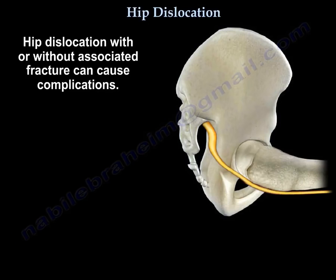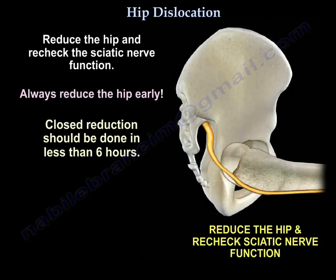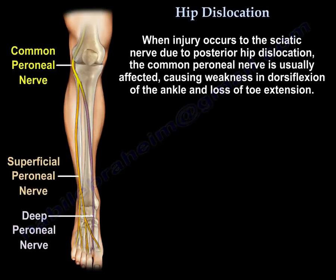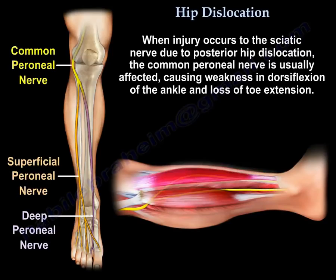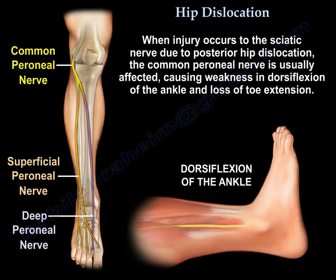Posterior hip dislocation can also cause sciatic nerve palsy. Reduce the hip and recheck the sciatic nerve. Always reduce the hip early — closed reduction should be done in less than 6 hours. When injury occurs to the sciatic nerve due to posterior hip dislocation, the common peroneal nerve is the nerve that is usually affected, causing weakness in dorsiflexion of the ankle and loss of toe extension.